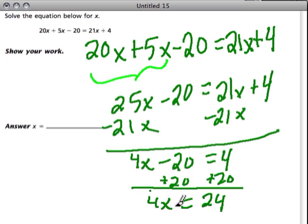4 times something is 24, so 24 divided by 4 will give me x, and x will be 6.